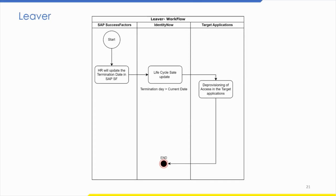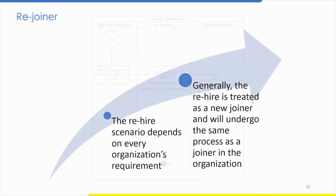In the leaver scenario, HR will update the termination date attribute in the SAP SuccessFactors system. Once the value is changed, the lifecycle state attribute in IdentityNow will be changed. If the lifecycle state value is inactive, then all access will be deprovisioned and all accounts will get disabled.